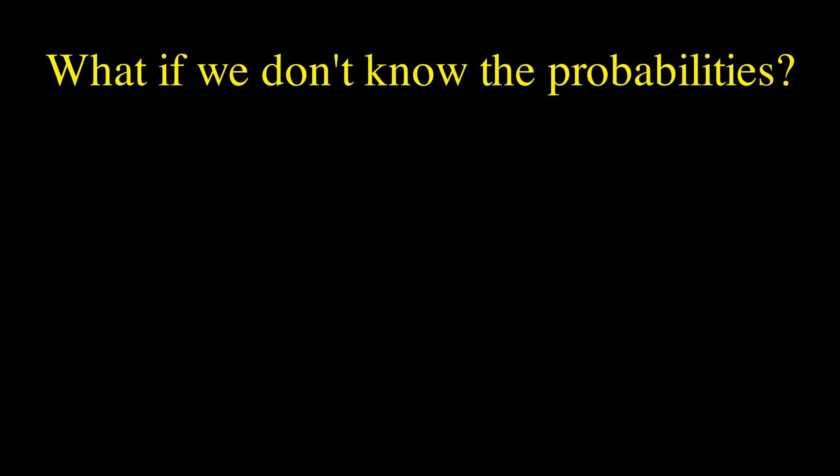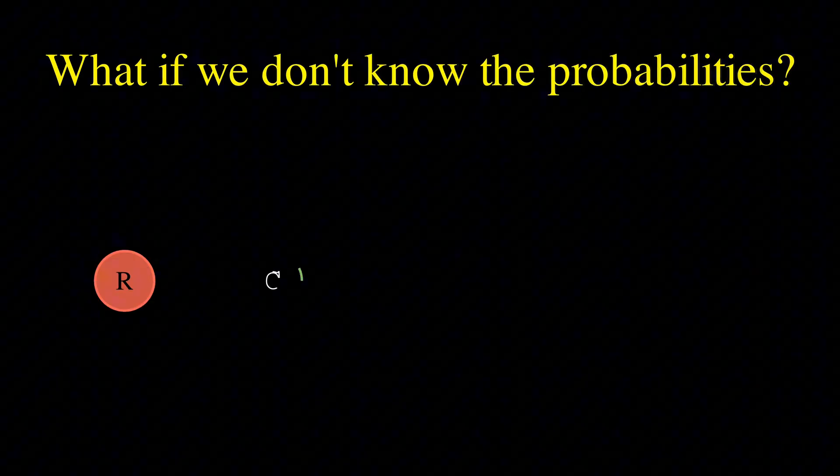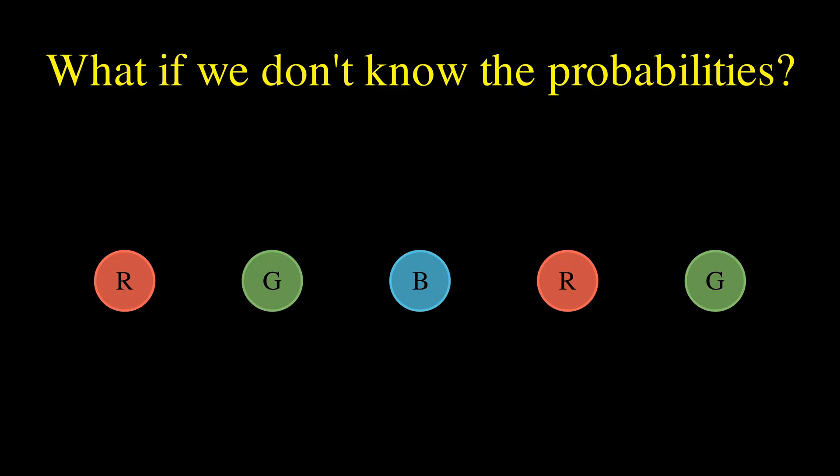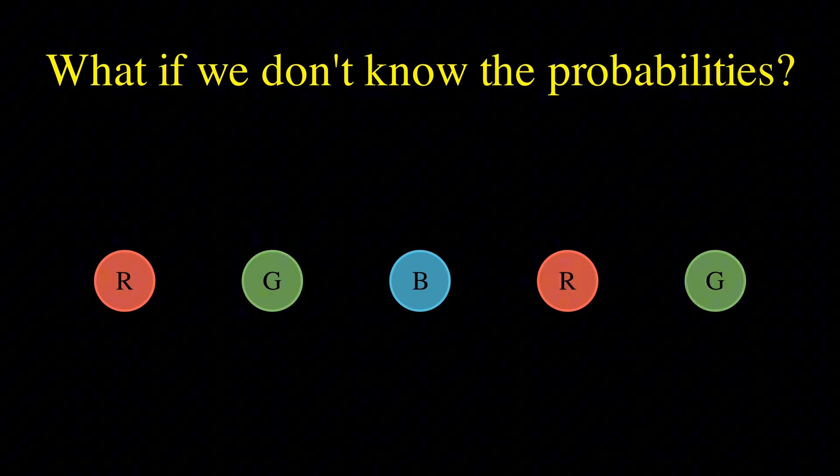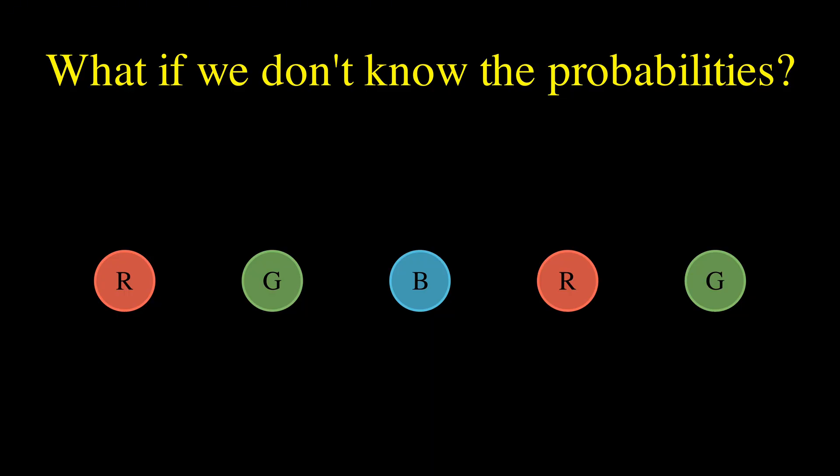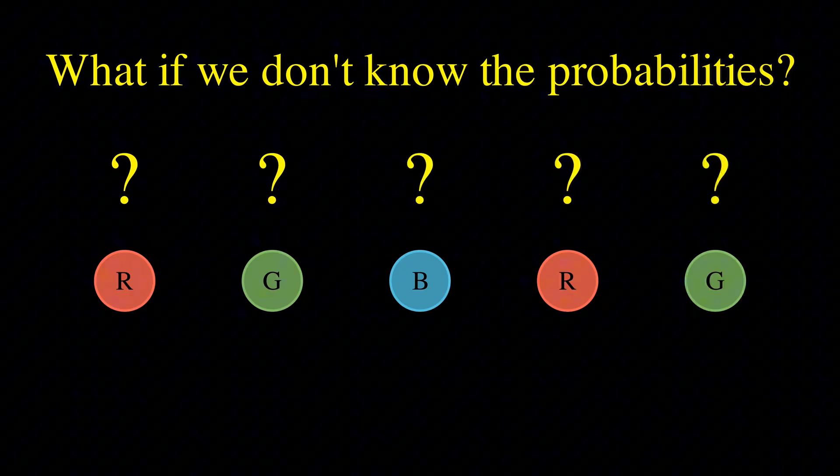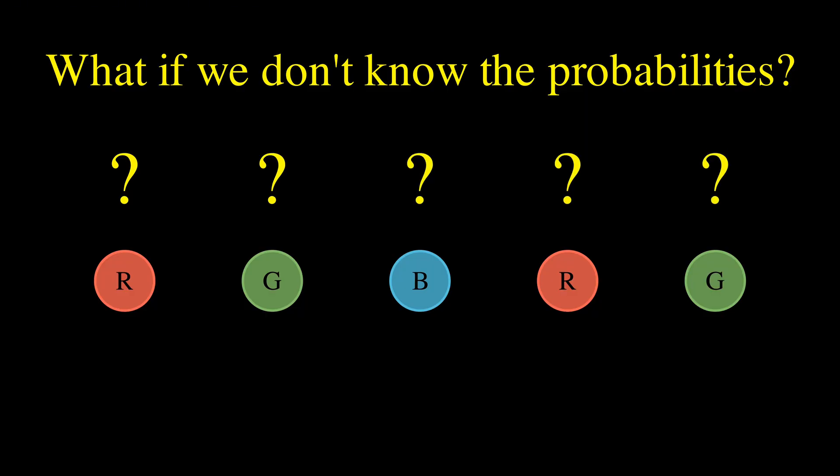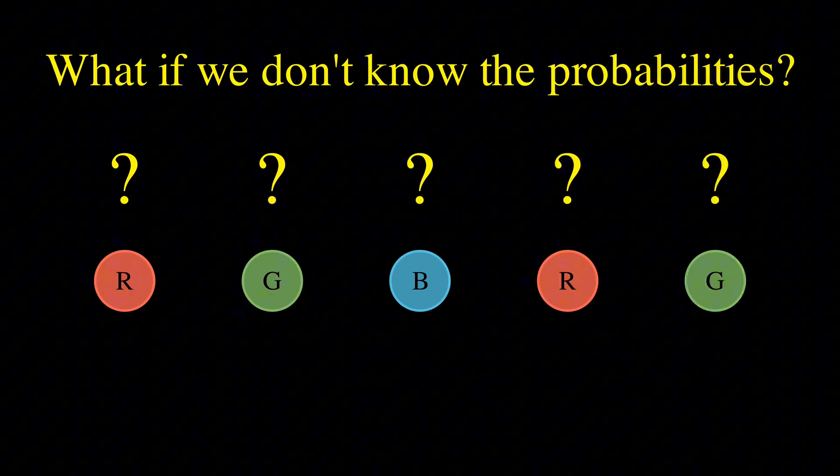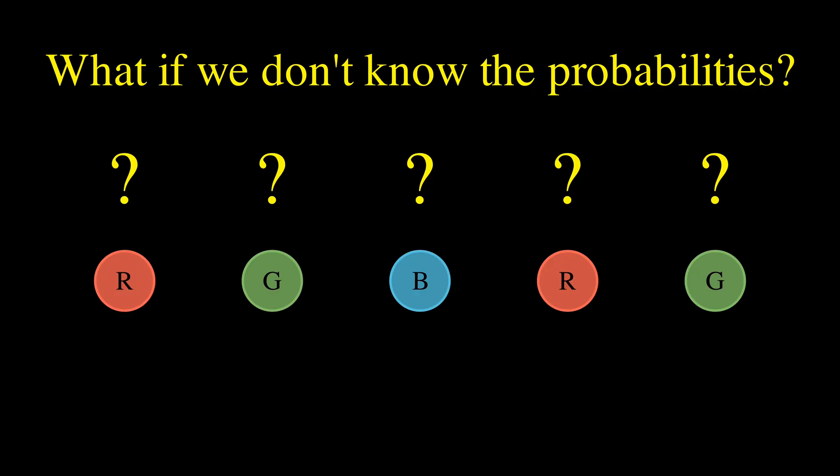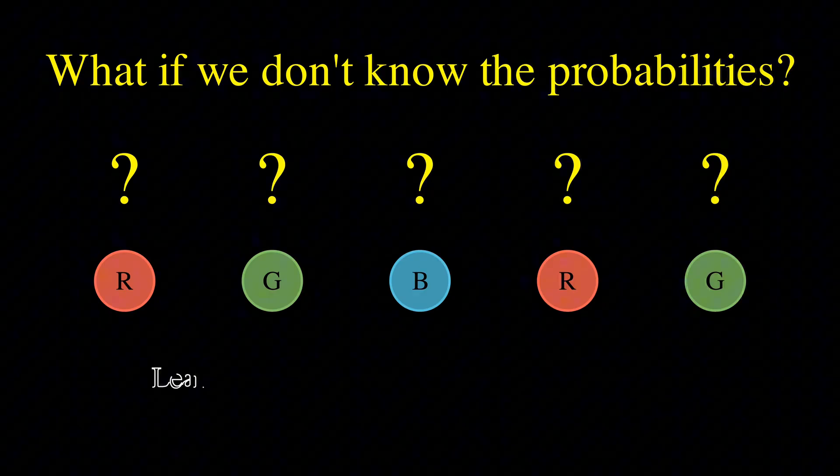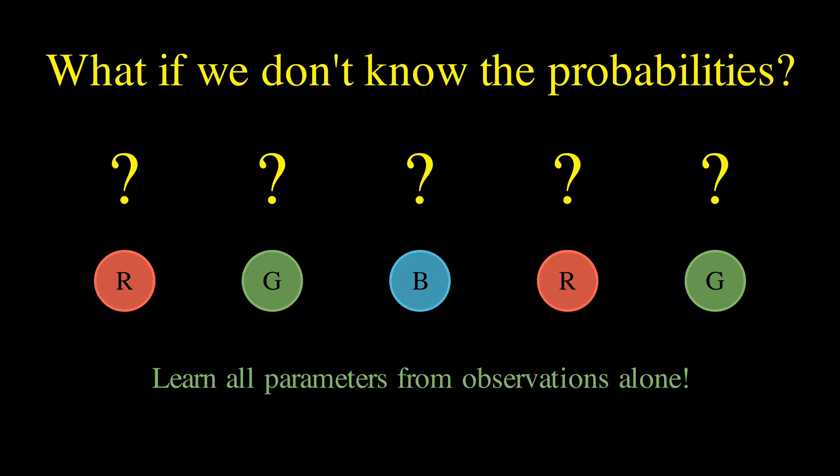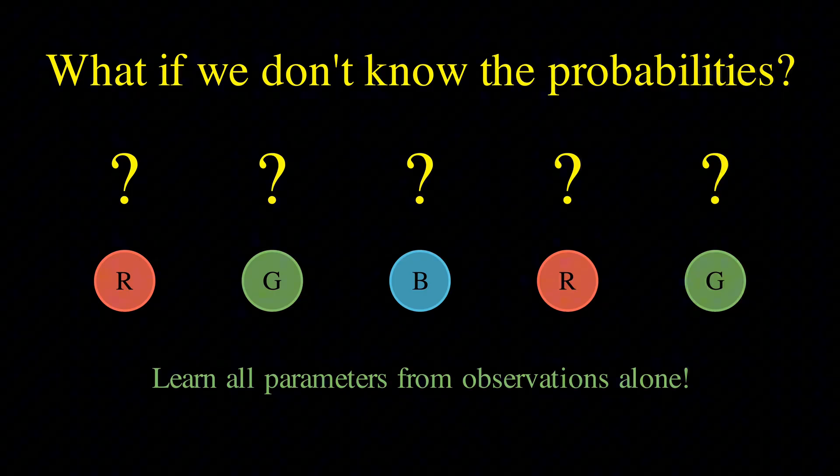Imagine you're watching someone wear different colored hats every day, and you suspect their mood influences their choice. But here's the catch. You don't know the probabilities, you don't know how likely they are to stay sad or become happy, and you don't know how each mood affects their hat selection. So the question becomes, can we learn these hidden patterns just by watching the hat colors over time?